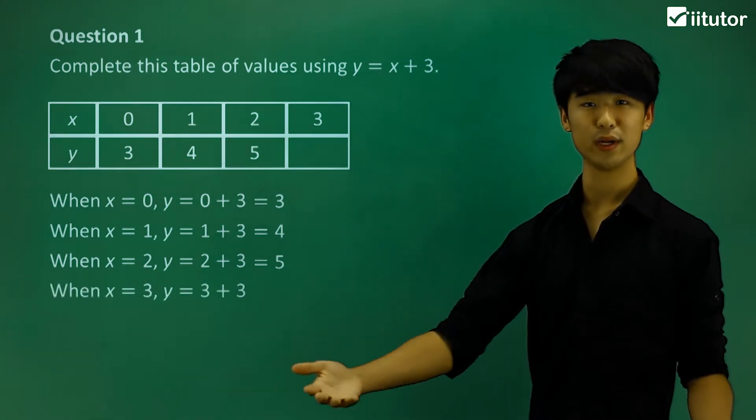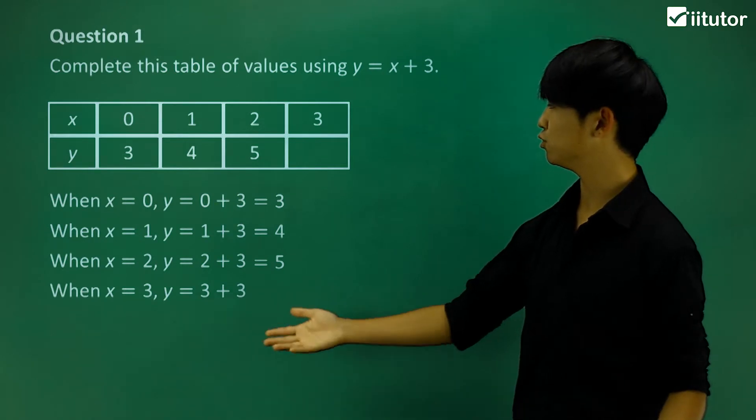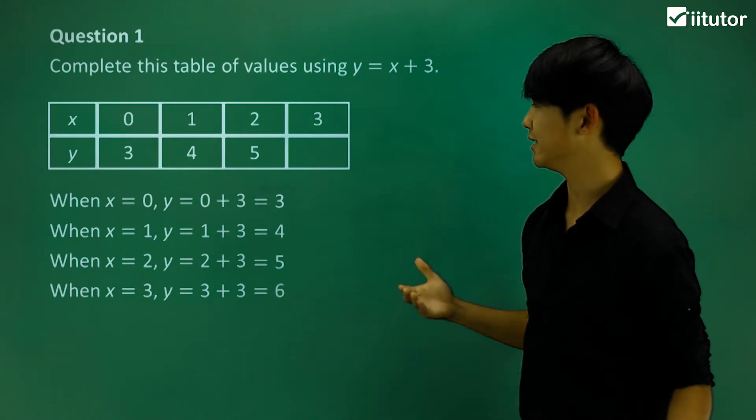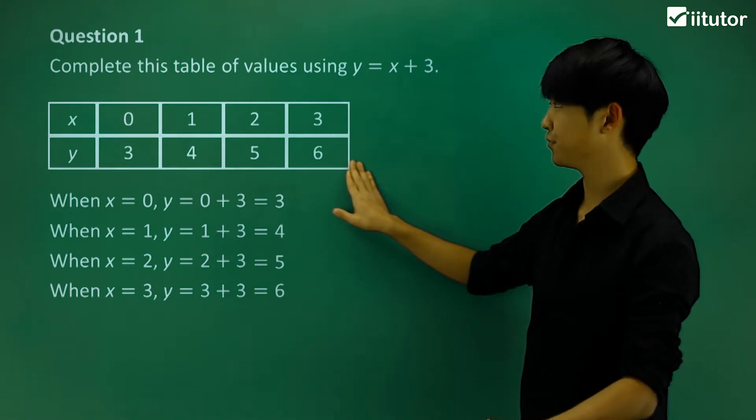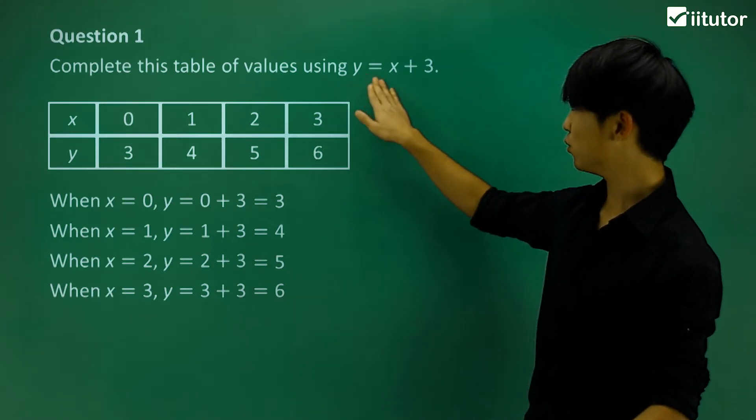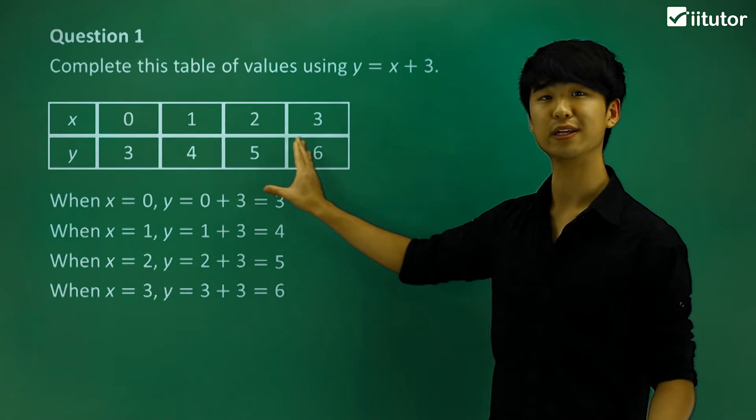And the last one, when x equals 3, y should equal 3 plus 3, which in turn is 6. We'll make sure that we fill it in there. So this is a very nice, easy example. We're given a relationship, and we're going to try and fill in the table of values.